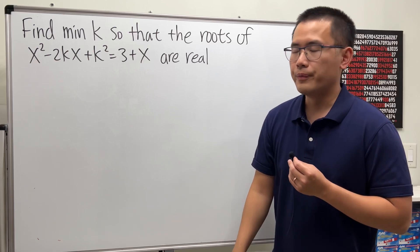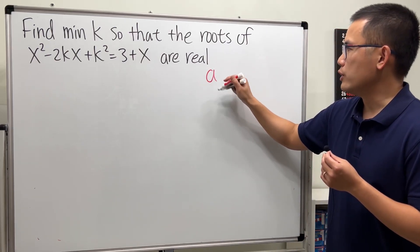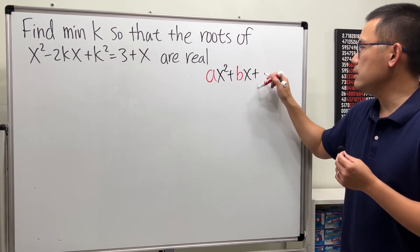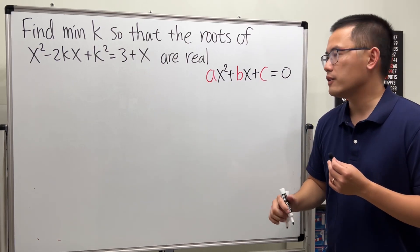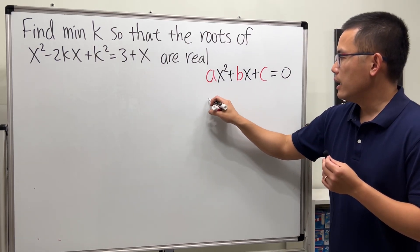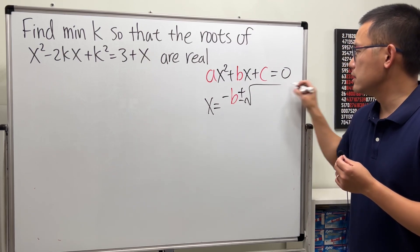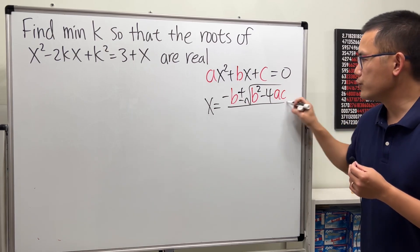So this is what we are going to do. Here is a quick review. If we have a quadratic equation ax² + bx + c = 0, of course we have the quadratic formula for x. X is equal to negative b plus or minus the square root of b² - 4ac all over 2a.